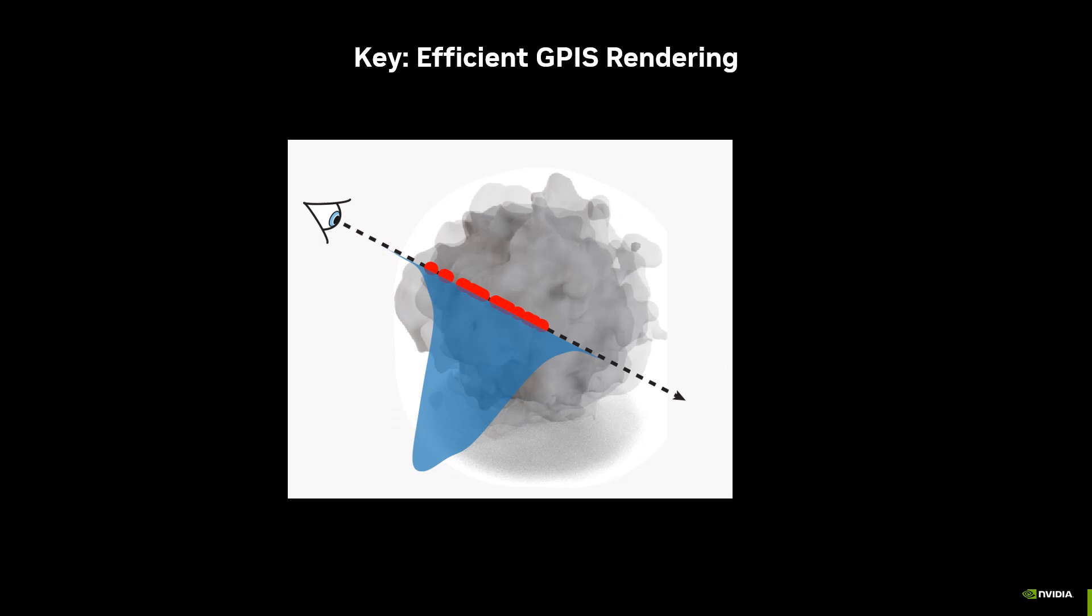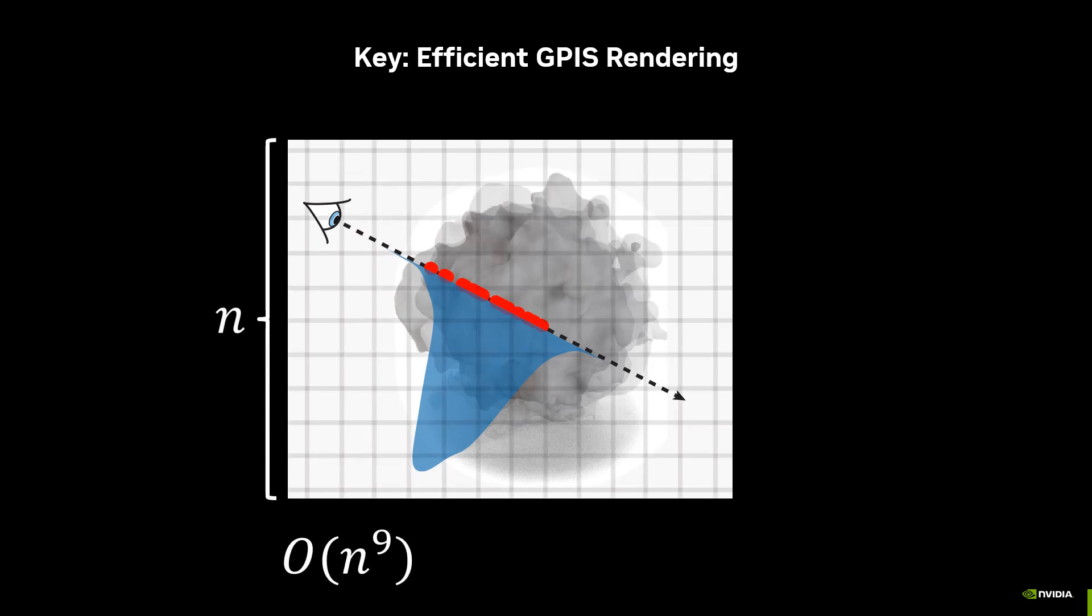The key achievement is our rendering algorithm, which reduces the naive cost that is the ninth power of the voxel resolution down to cubic cost in the correlation length along the ray.